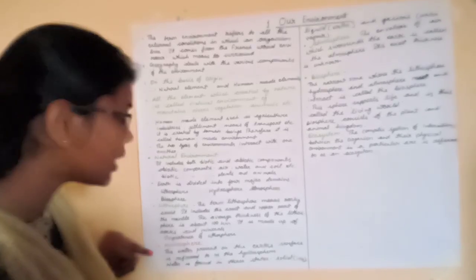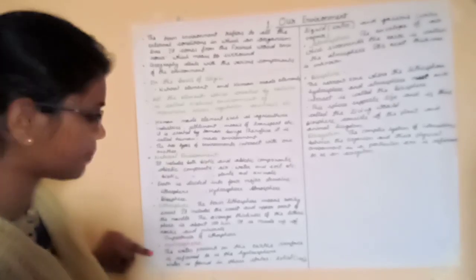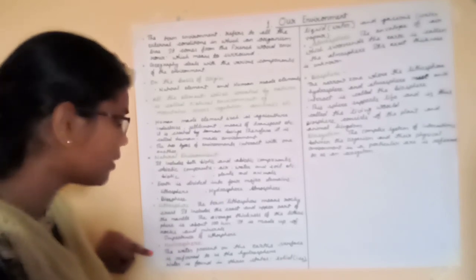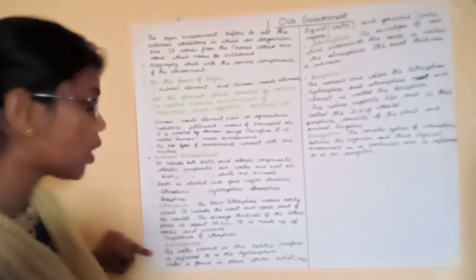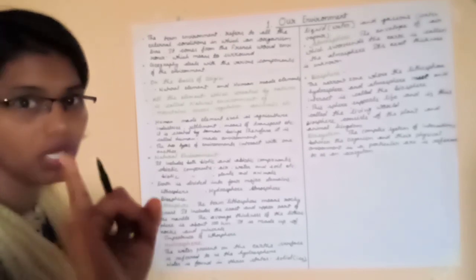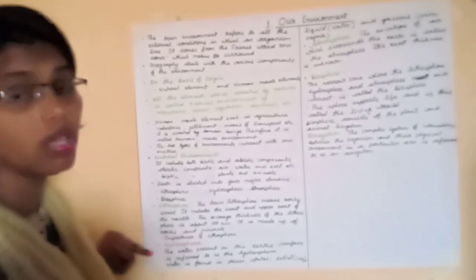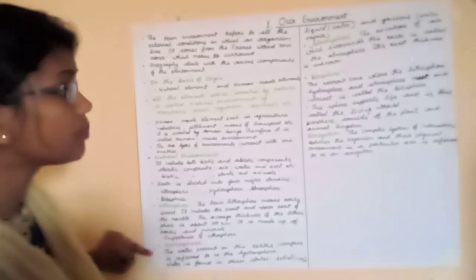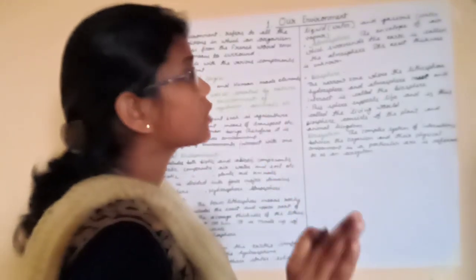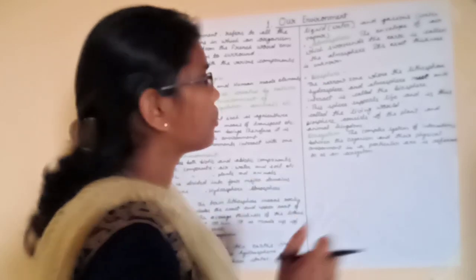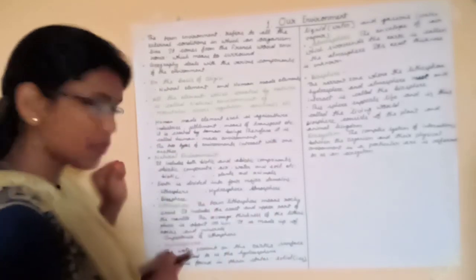Water is very essential for all living beings. On the earth, water is found in three states: solid, liquid, and gas. Solid means ice form; liquid is the water we drink; and the gaseous form is water vapor.